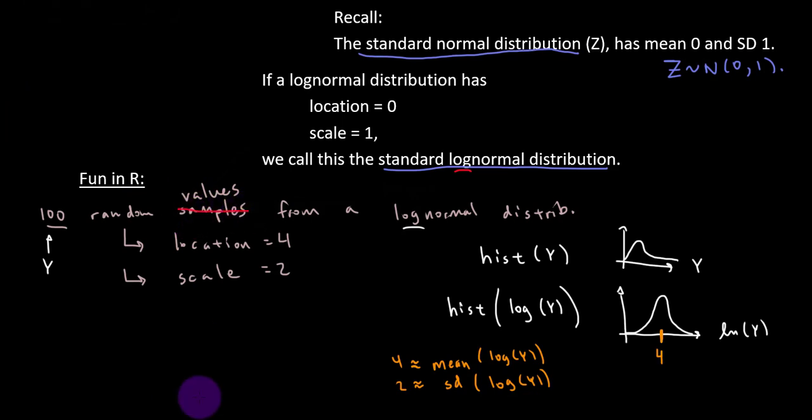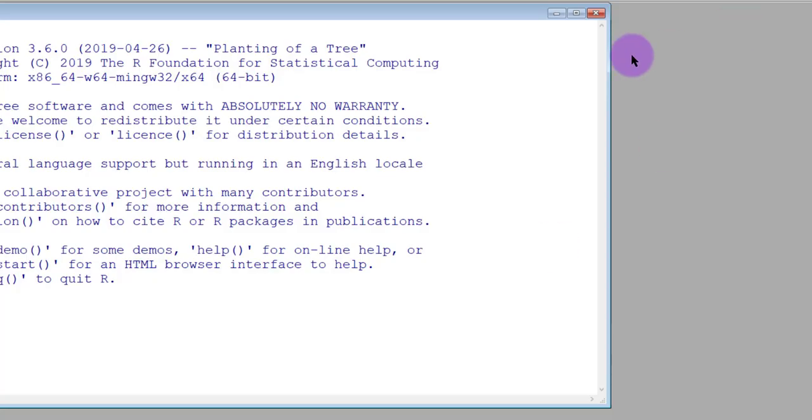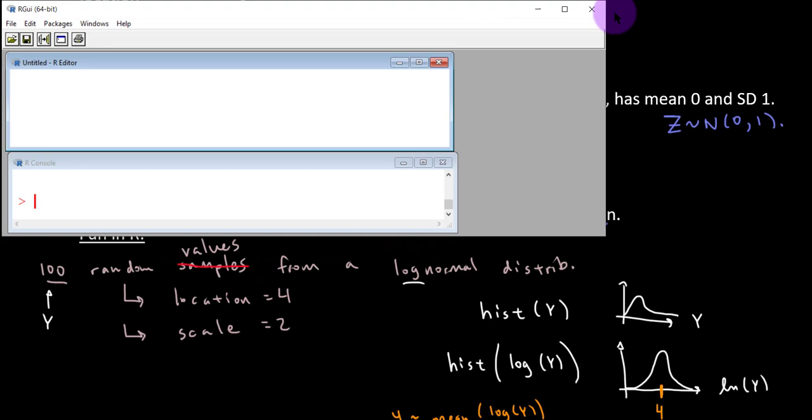Okay, let's go check this out in R. So I'm going to use Y equals random. Now we saw rnorm, but we want random values from a log-normal, so that's rlnorm. And we want 100 of them with a location of 4 and a scale of 2.